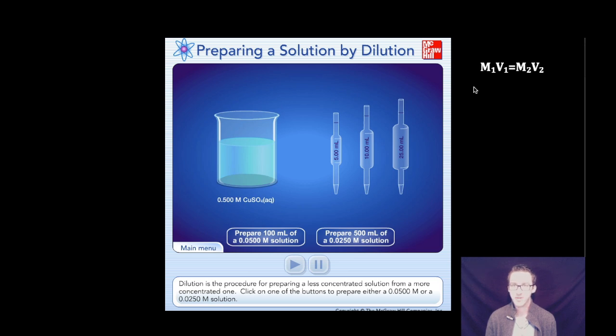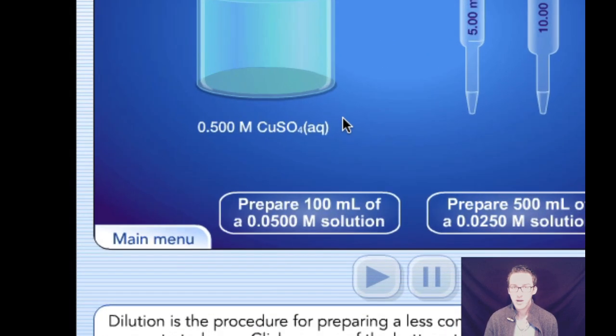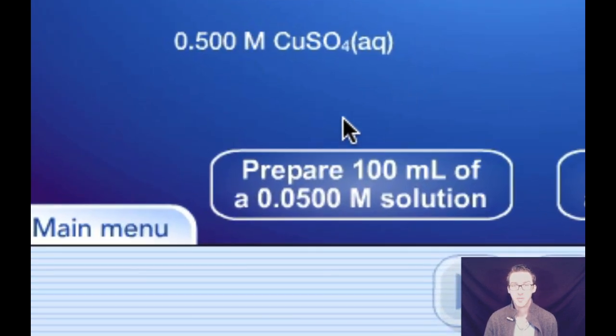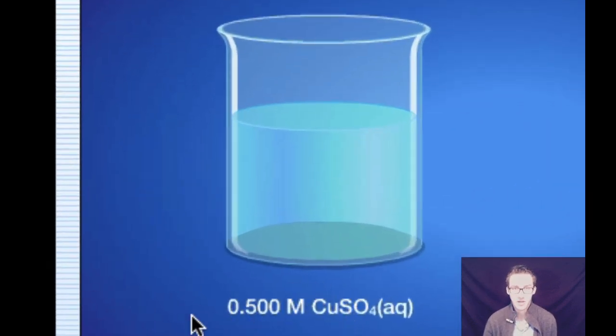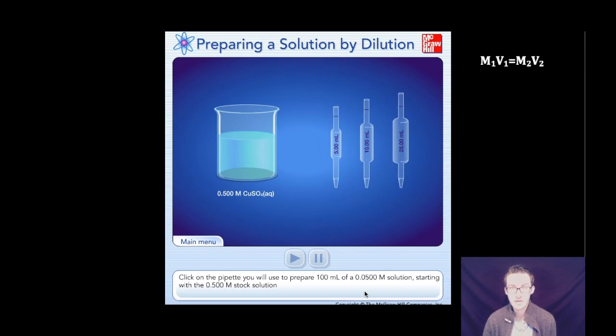All right. So as you take a look at your screen, I provided you with the dilution formula M1V1 equals M2V2. And we want to recognize here that our stock solution is 0.5 molar copper 2 sulfate. This is essentially our initial concentration. And we are in this video going to prepare 100 milliliters of a 0.0500 molar solution. So we want to dilute our 0.5 molar concentrated solution to 0.05 molar.